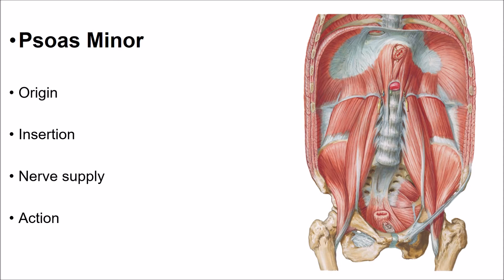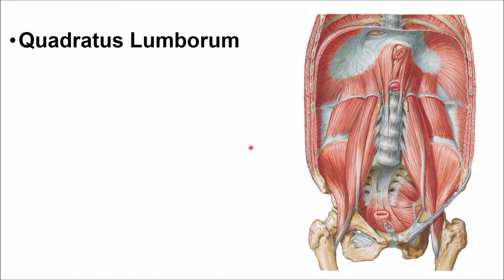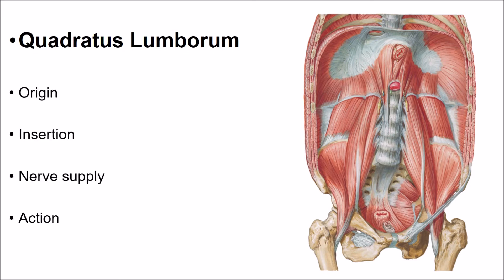The psoas minor acts as a weak flexor of the trunk. The quadratus lumborum is a quadrilateral muscle which lies between the twelfth rib above and the iliac crest below. This muscle is enclosed between the anterior and middle lamina of thoracolumbar fascia. It arises from the posterior one-third of the inner lip of the ventral segment of the iliac crest and the iliolumbar ligament. The muscle passes upwards and medially and inserts onto the lower border and anterior surface of the medial part of the twelfth rib. A few fibers attach to the anterior surface of the transverse process of the upper four lumbar vertebrae.